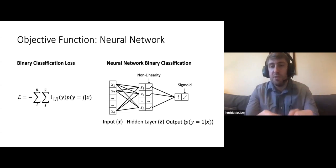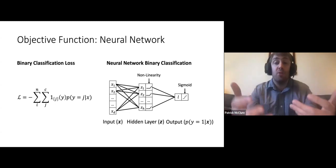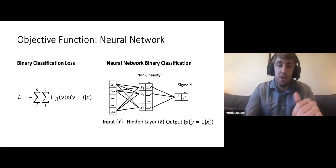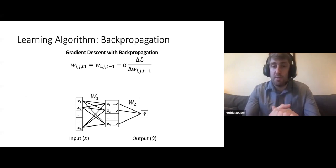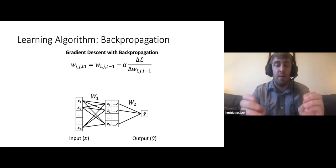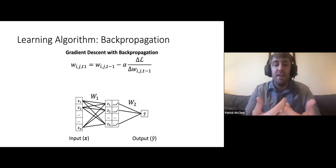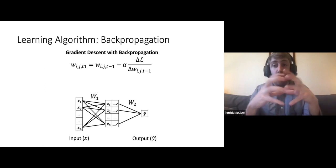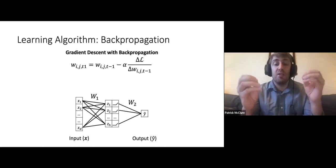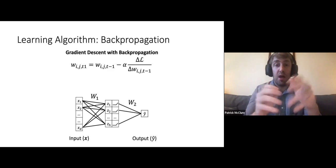Now that we have looked at the data, the models, and the objective functions, we can ask: how do we find the parameters of these neural networks that lead to good outputs? We return to learning algorithms. As we discussed with linear models, gradient descent is the most common training method for neural networks. What you'll often hear about is something called backpropagation — this is applying the chain rule in a way that allows us to compute the gradients for parameters throughout a neural network.